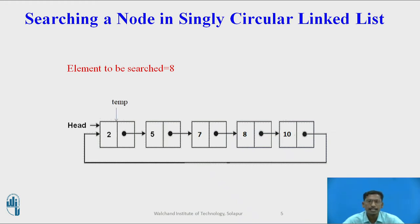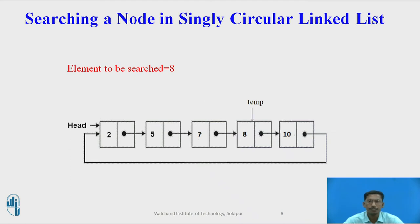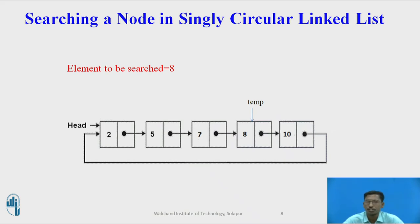First, 8 is compared with 2 — match not found, go forward. Then 8 is compared with 5 — match not found, go forward. Then 8 is compared with 7 — match not found, go forward. Then 8 is compared with 8 — match found. You return true, and stop searching and traversing.